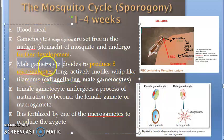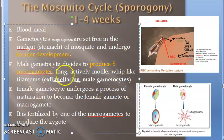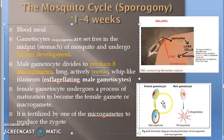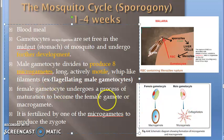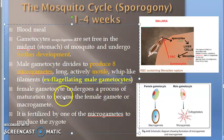The male gamete divides to produce eight micro gametes which are motile. They have whip-like filaments. This process is called exflagellation — the male gametocyte is an exflagellating male gametocyte.